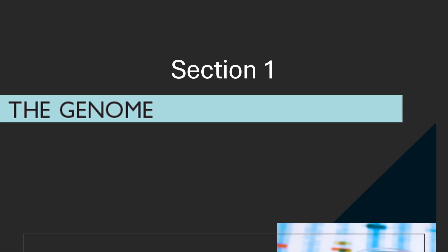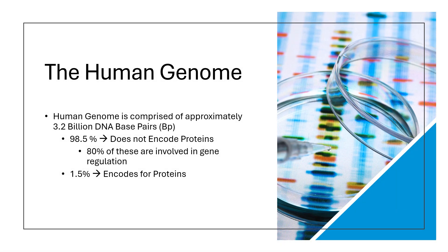The first section we will be covering is the genome, located on page 1, chapter 1 of your book. Before we dive in, we need to understand the human genome. The human genome is made of approximately 3.2 billion DNA base pairs. Out of all these base pairs, 98.5% do not encode for proteins — they just don't make any proteins. These non-coding genes do have a function though: they are involved in gene regulation of the 1.5% of the genome that does encode for protein. Therefore, they regulate or control those genes that do.